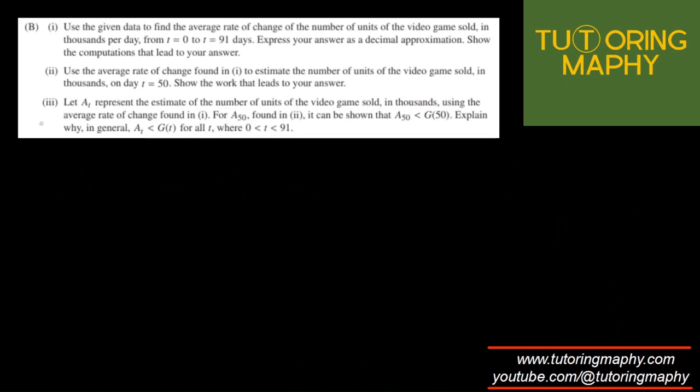Question number B, part B, question 1. Use the given data to find the average rate of change of the number of units of the video game sold in thousands per day from 0 to 91. Express your answer as a decimal approximation and show the computation. We can do that. We know the formula for AROC. That's going to be Y2 minus Y1, which is essentially G of 91 minus G of 0 over X2 minus X1. So 91 minus 0 over here.